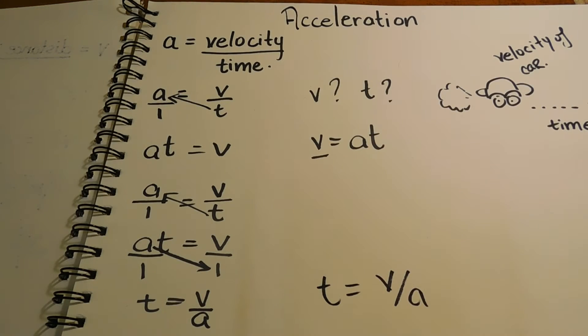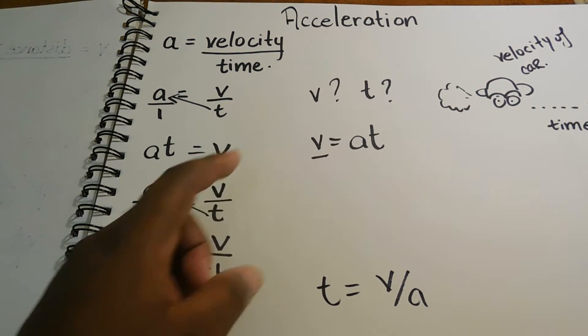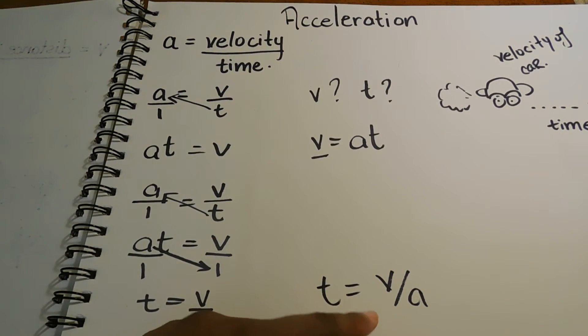There we have it. If a is equal to v over t, then v is equal to a times t, and t is equal to v over a. Cool.